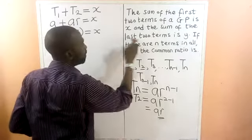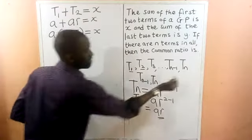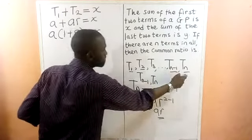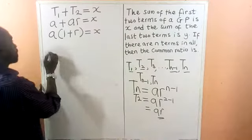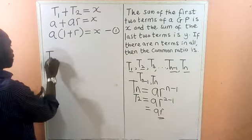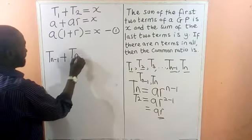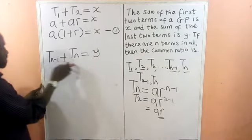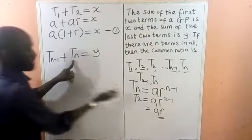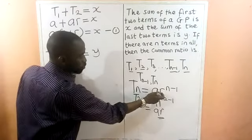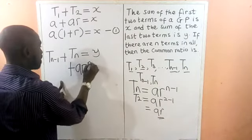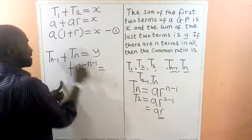The sum of the last two terms must equal Y. The last term is TN and the term before it is TN minus 1. So TN minus 1 plus TN equals Y. This is the sum of the last two terms. The formula for TN is A times R raised to the power of N minus 1.